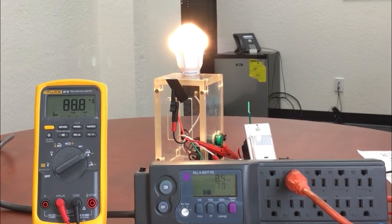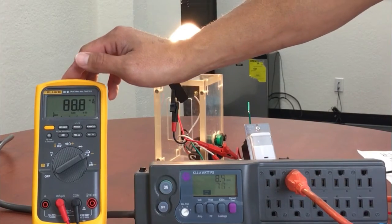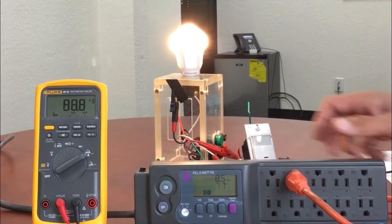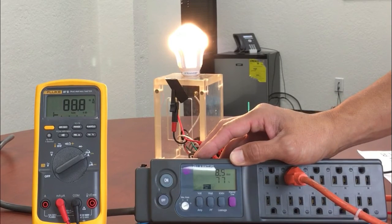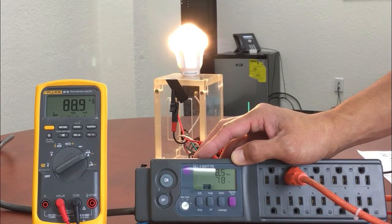The Fluke shows 88.8 milliamps, and the kilowatt shows 8.5 watts and 77% power factor.